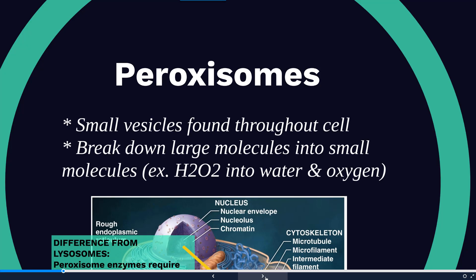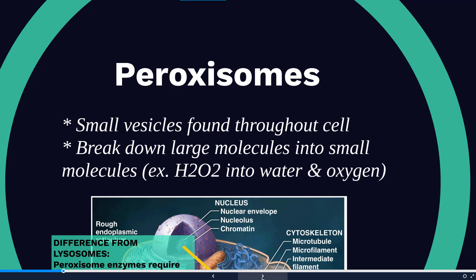Peroxisomes are small vesicles found throughout the cell. They're responsible for breaking down larger molecules into smaller molecules, and usually it's helpful for making something turn from something that might be dangerous to the cell to something less harmful. For instance, hydrogen peroxide (H2O2) can be transformed into water and oxygen, which are harmless to the cell.